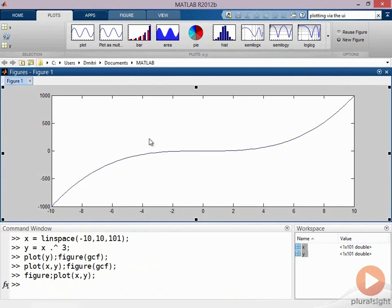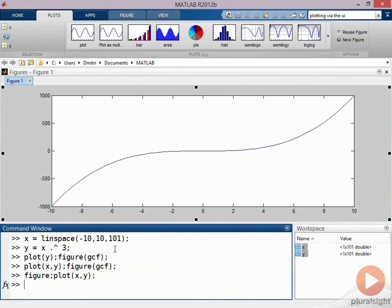So plenty of options for the kind of two-dimensional graphs that you can do. There are histograms, pie charts, log-scaled axes, and that sort of thing. You can explore this on your own. We're going to do a 3D plot now.